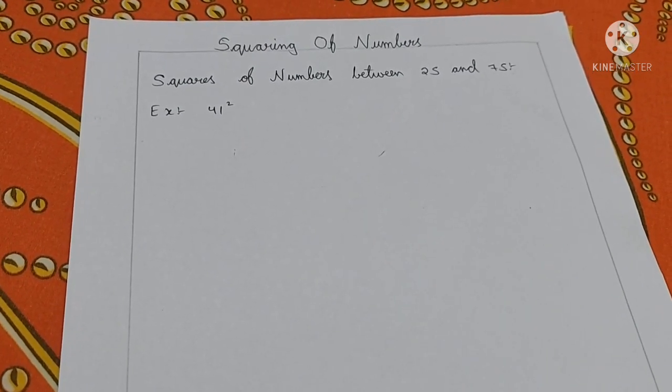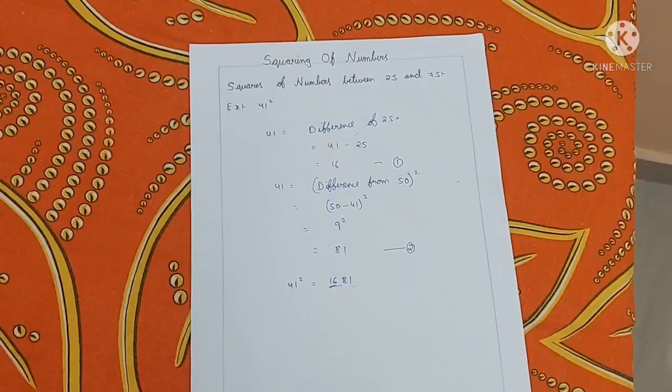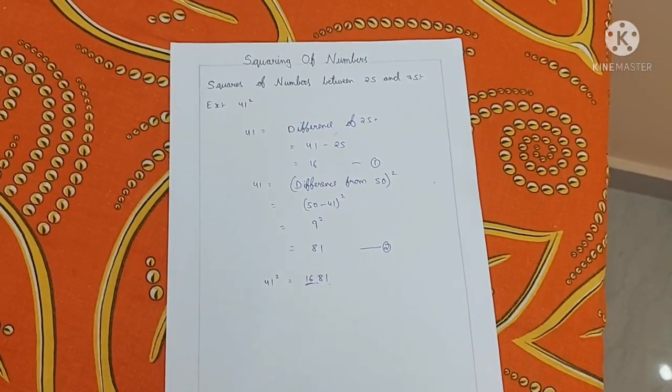If you know the squares from 1 to 25, you can easily extend it up to 25 to 75 and 75 to 125. To find the squares of numbers between 25 and 75 easily,